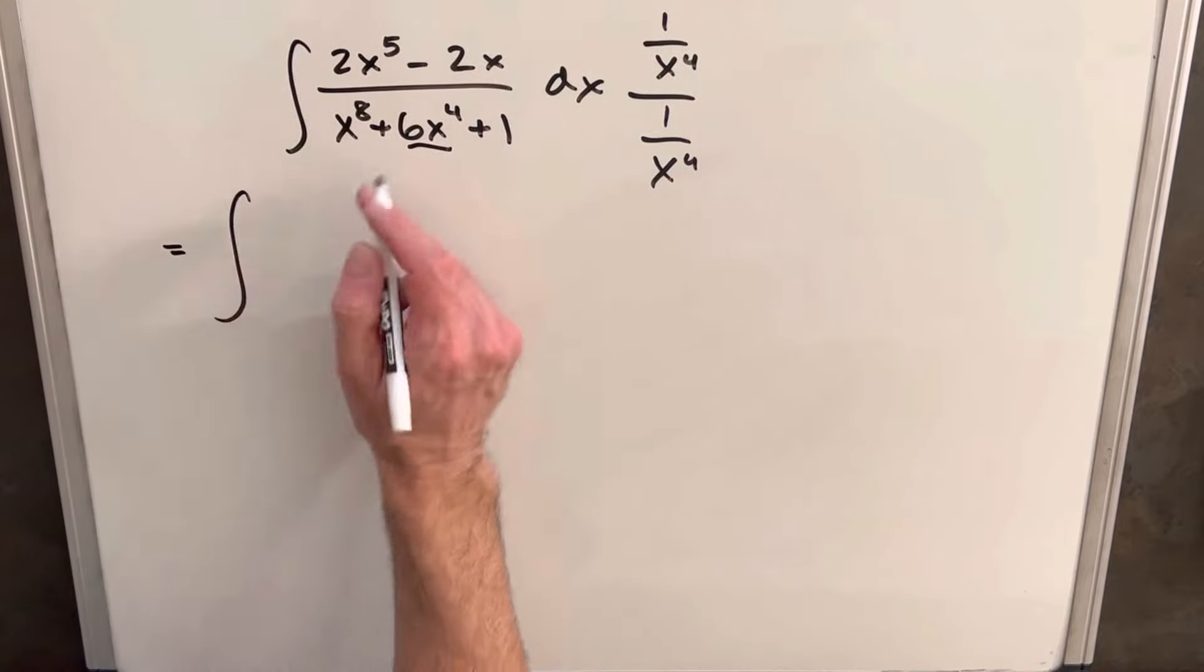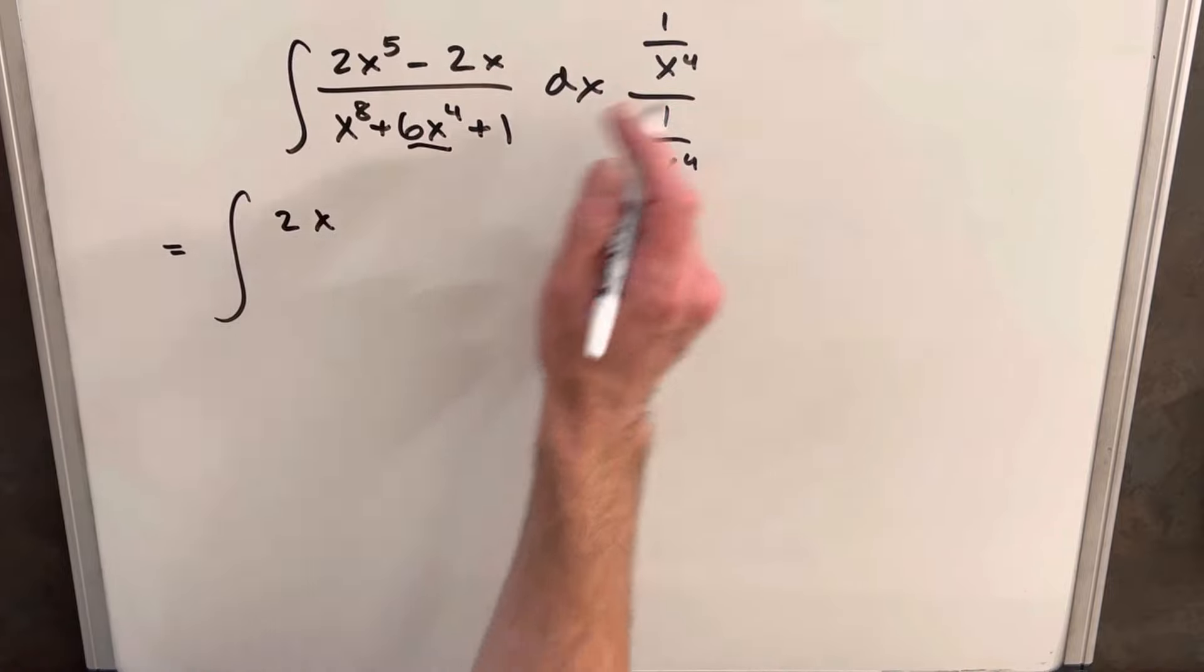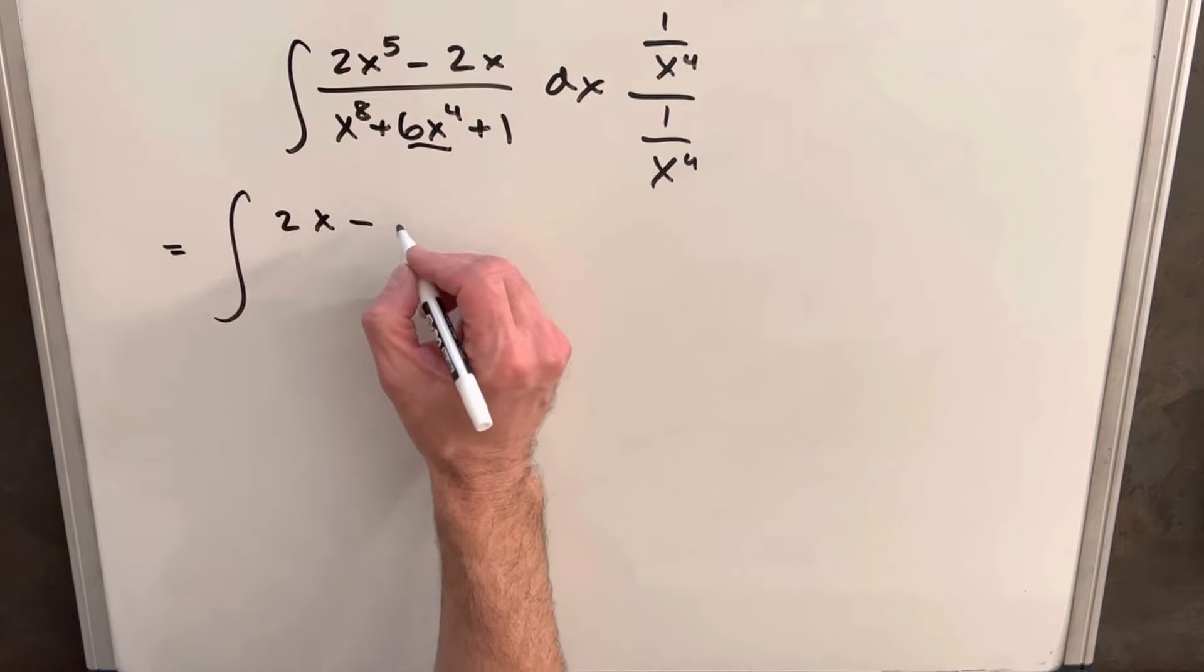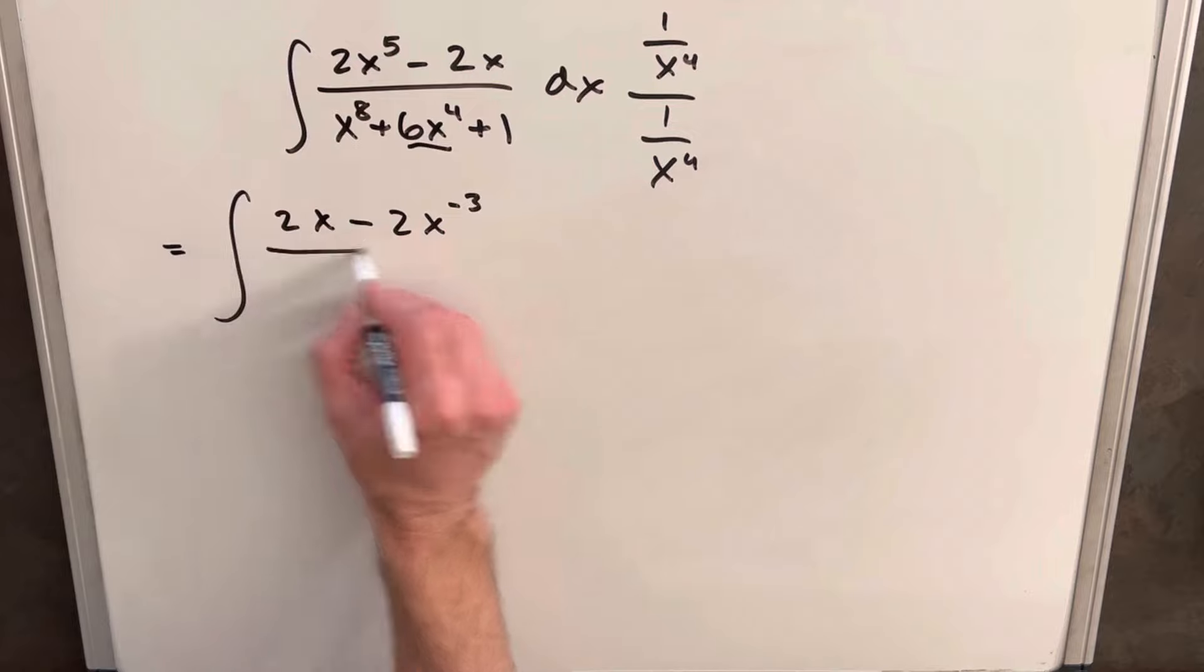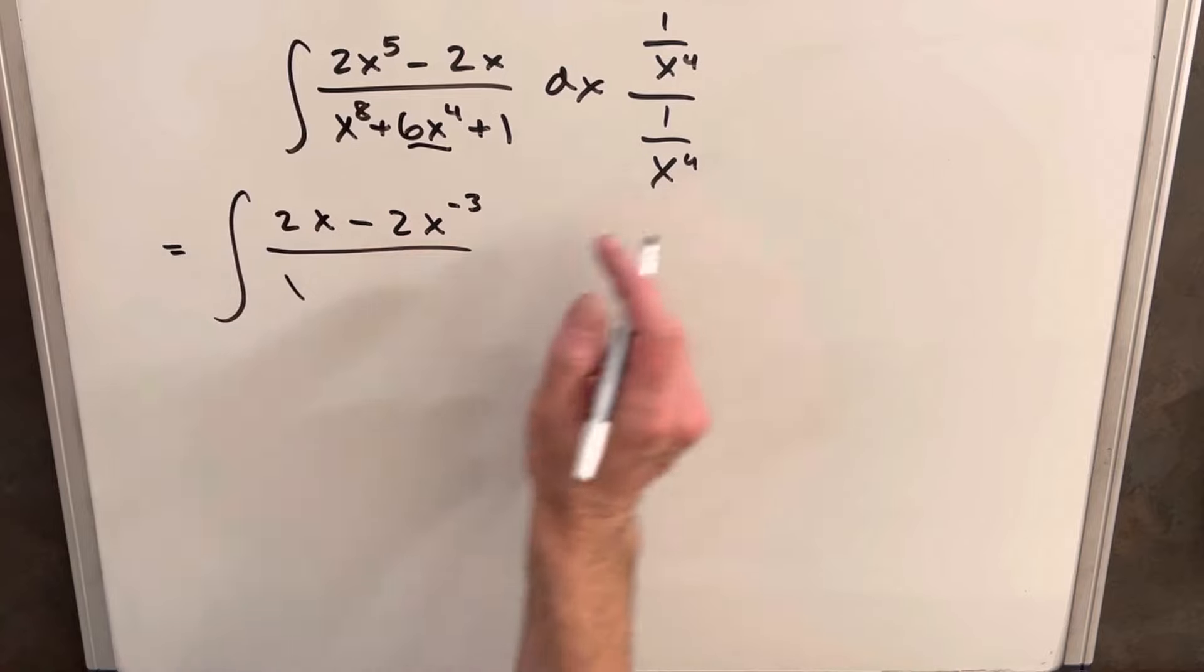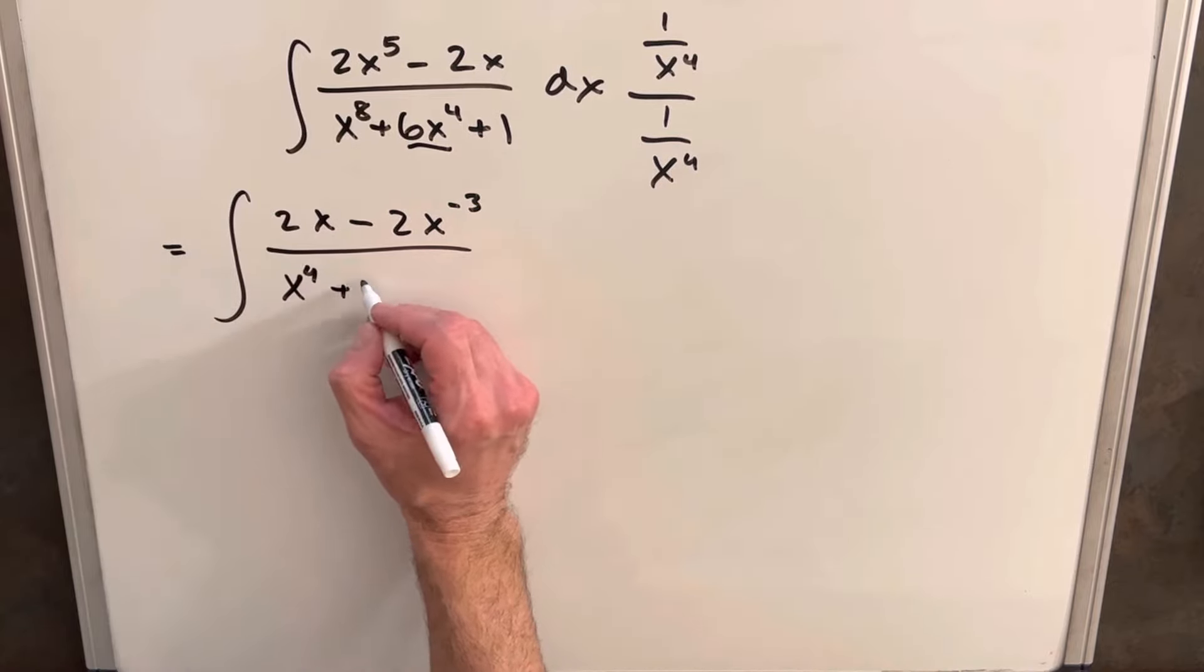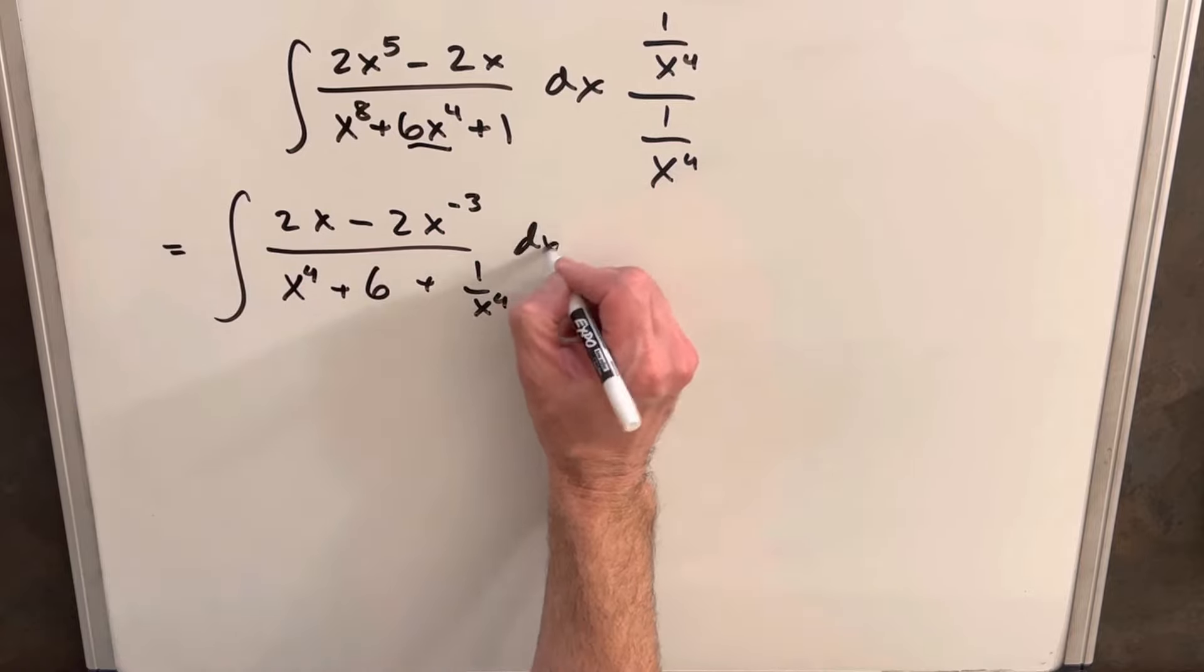So in our numerator, we're going to have 2x. Notice that x to the 4 cancels out with x to the 5, and just leave this 2x minus 2x. I'm going to write this as minus 3. We could write it as 1 over x cubed 2. And then in the denominator, we're going to have, multiplying this in here, we're going to have x to the 4th plus 6 plus 1 over x to the 4th dx.